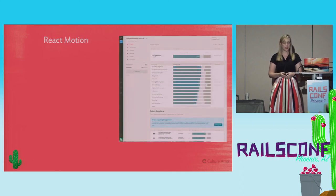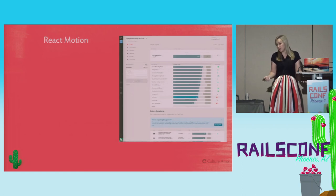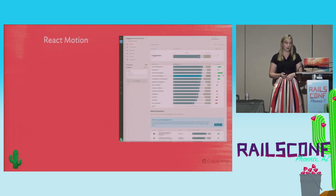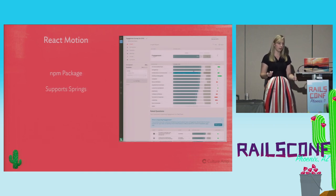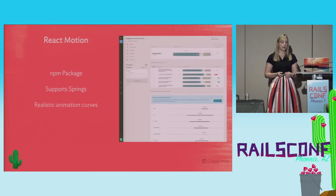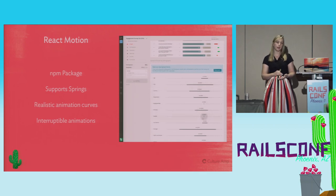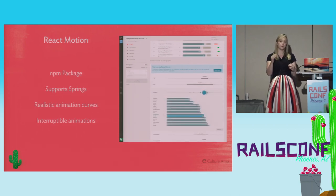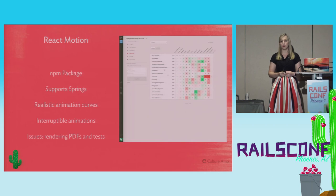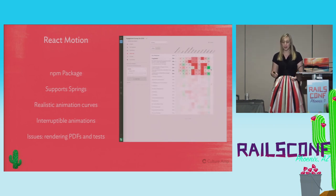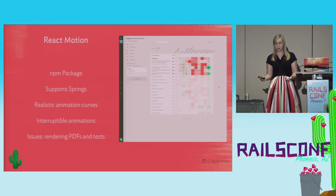We also introduced animation with our single page transitions — we needed feedback in the UI to show the user the page was changing. We found a library called React Motion that did things like shifting bars from the old value to the new value when data was changing. It's an NPM package that supports springs — a way of animating things in the UI. Unlike timed animations, springs are interruptible, giving you nice realistic animation curves, but if you have to stop halfway through it can jump from wherever it is to the next place. Some issues: when rendering PDFs we had to make sure animations weren't running, and in tests we had to find ways around it so we weren't checking component values with animation half-run.